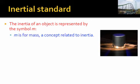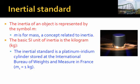The inertia of an object is represented by the symbol M. You may have heard this referred to as mass. The letter M does stand for mass, which is a concept related to inertia. But inertia itself means the resistance of an object to acceleration. Inertia is represented by the symbol M. The SI unit of inertia that we will use is the kilogram. And the inertial standard is this platinum-iridium cylinder that's stored at the International Bureau of Weights and Measures in France.